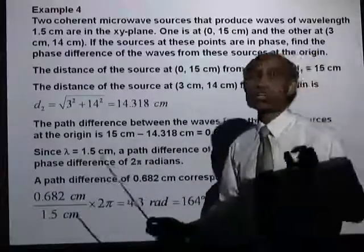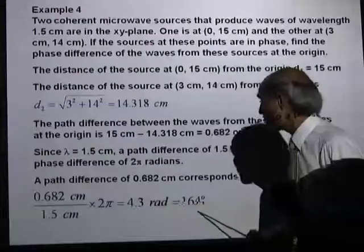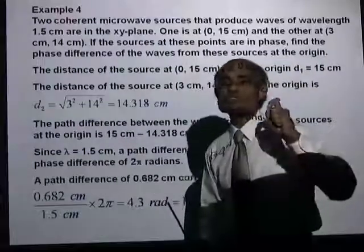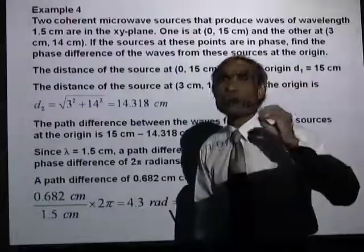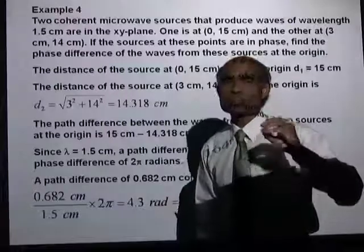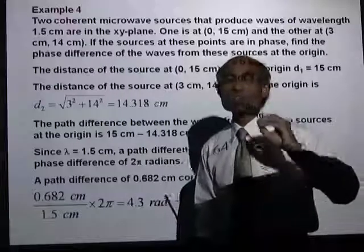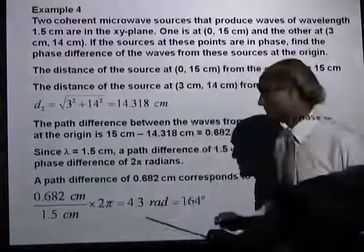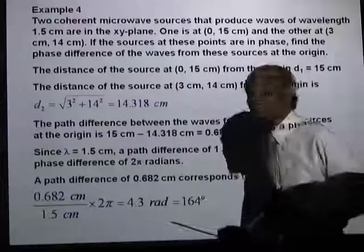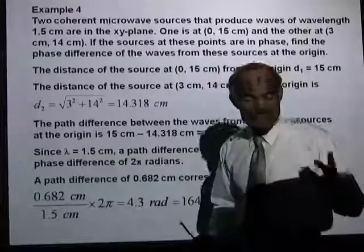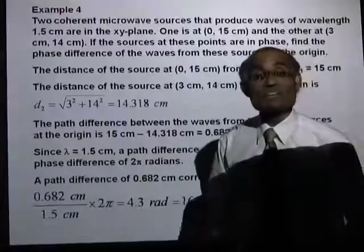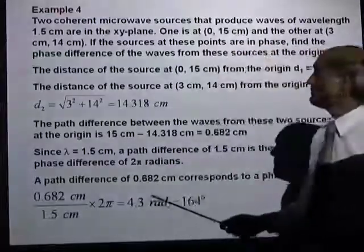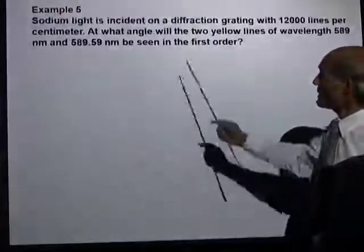That is the phase difference between the sources at the origin. If you use this value of delta in the equation for the resultant amplitude — 2E₀ cos(δ/2) — you will be able to obtain the resultant amplitude at the origin.